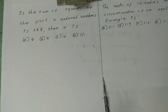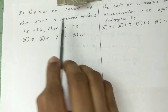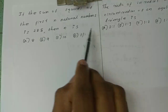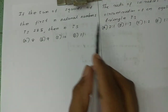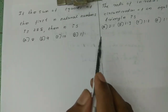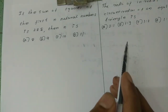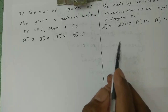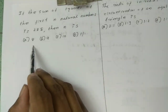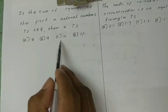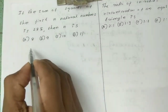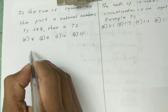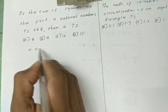We will discuss part 3. The question is: if the sum of squares of the first N natural numbers is 285, then N is — option A: 8, option B: 9, option C: 10, option D: 10.